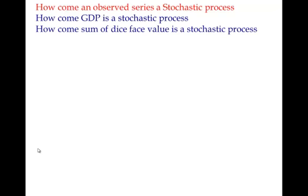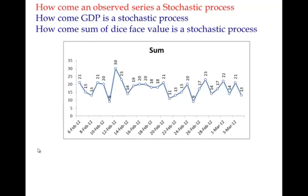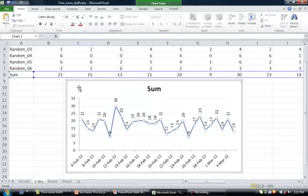The next question is: how can GDP be a stochastic process? The GDP value is given — so what is the relationship with the stochastic process? Similarly, with the dice sum, once you have observed the data — it's 21, it's 15, it's 13 — how is it still stochastic in nature?